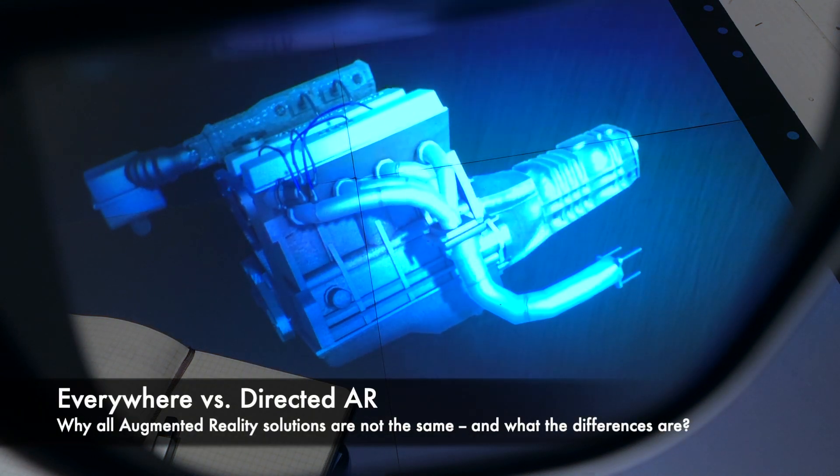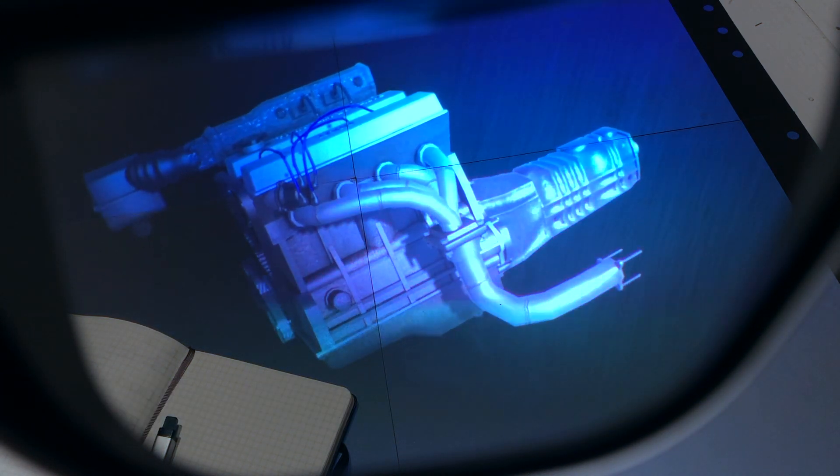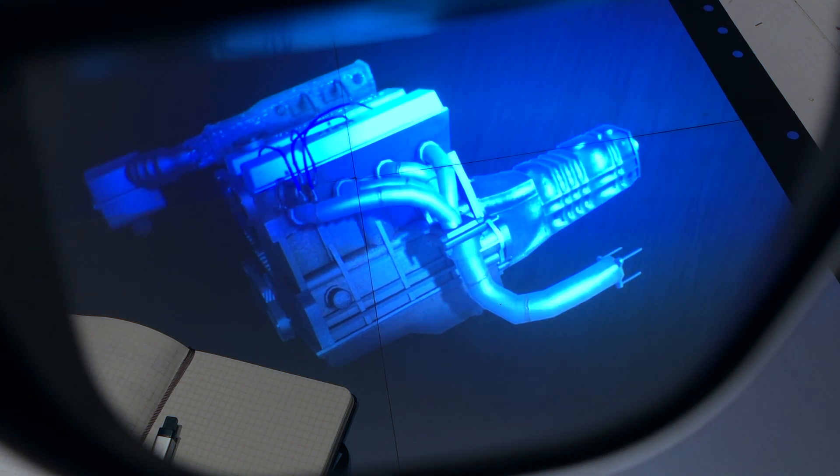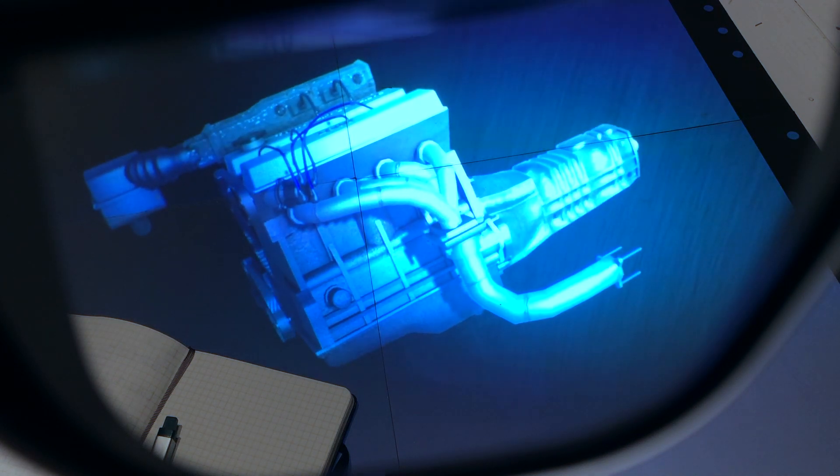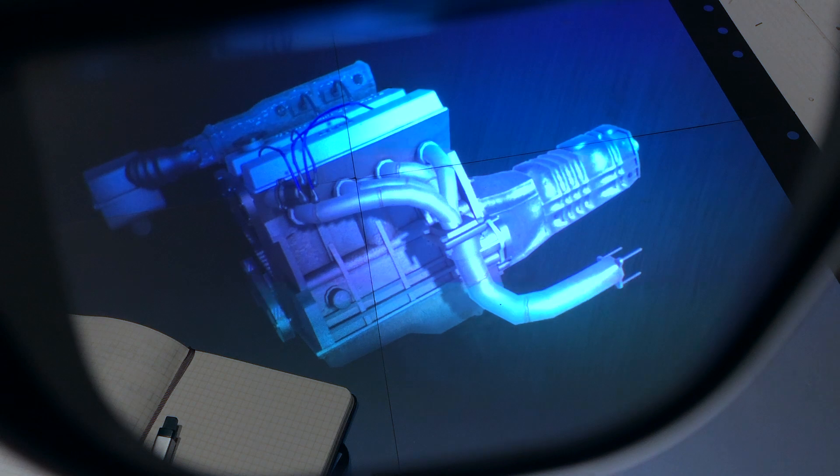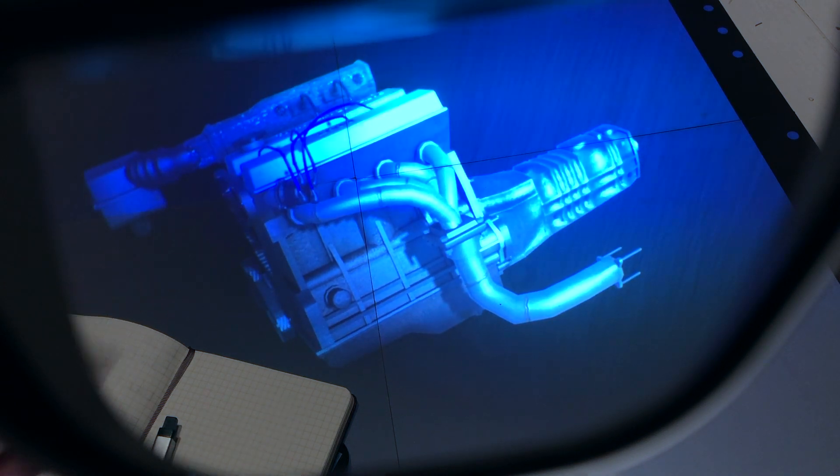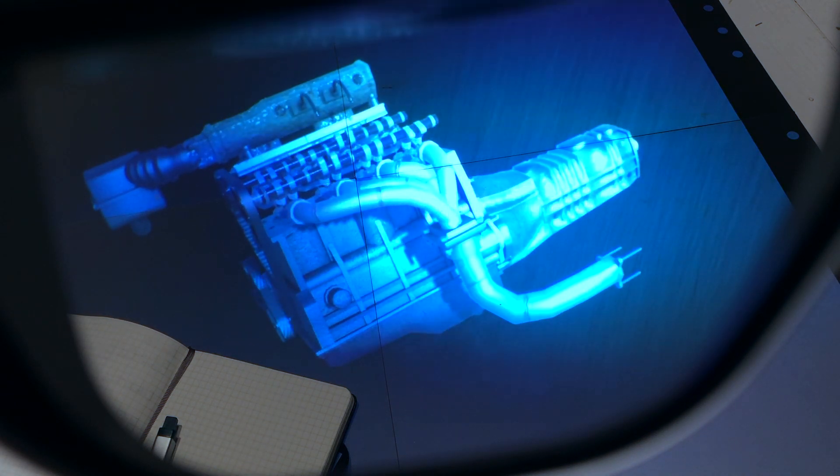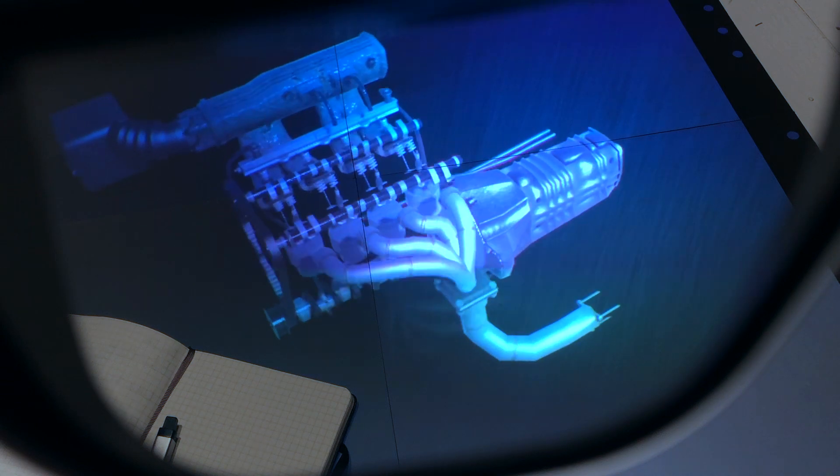Currently we're looking through a single lens of a pair of AR glasses. Now augmented reality is different to virtual reality because it blends the digital world, so in this case the engine block, which we can take apart and rotate.